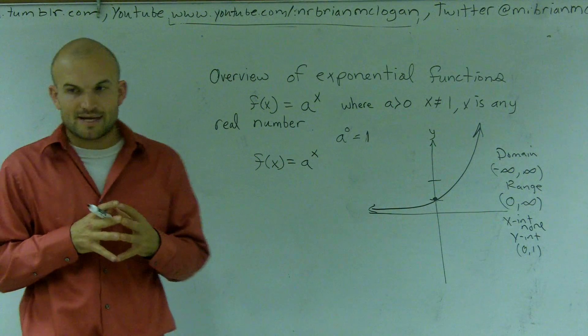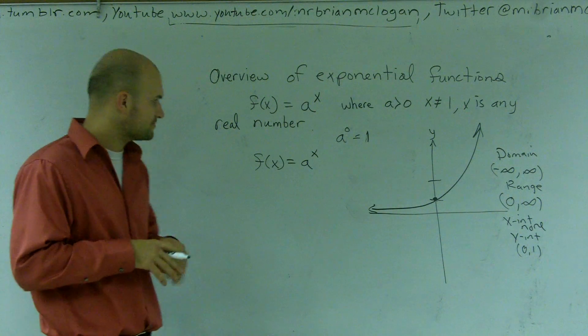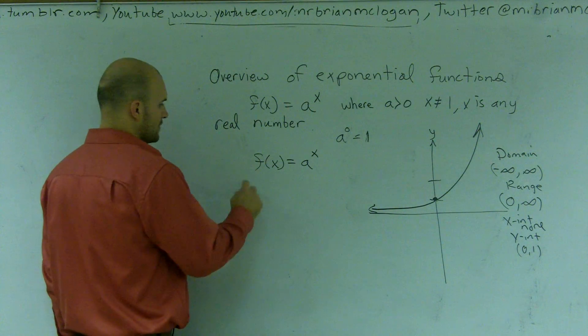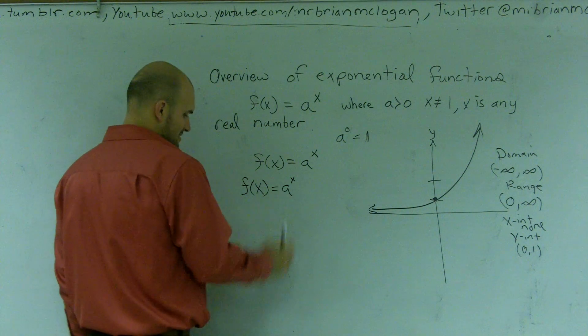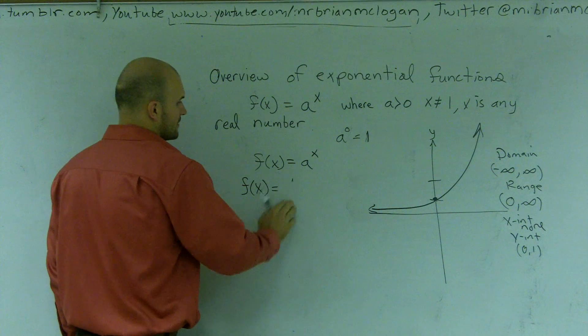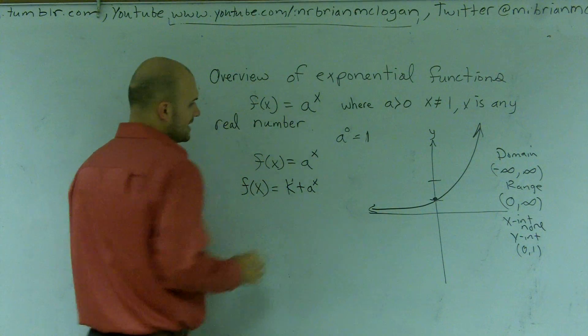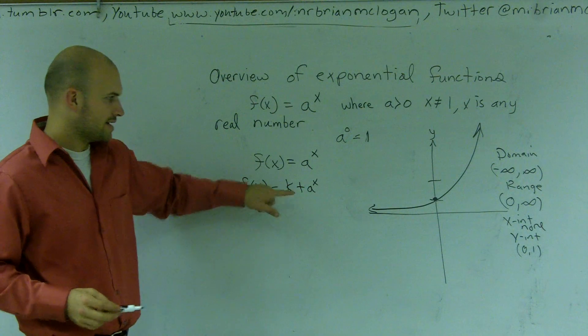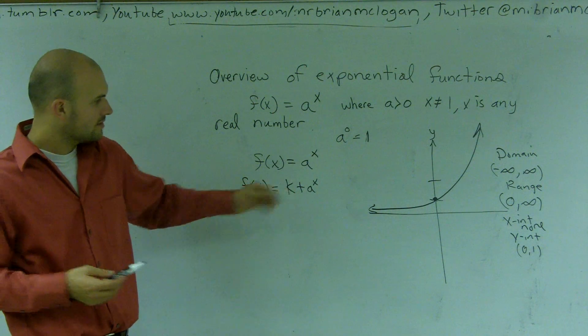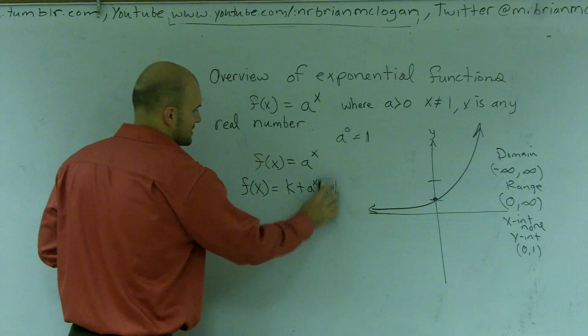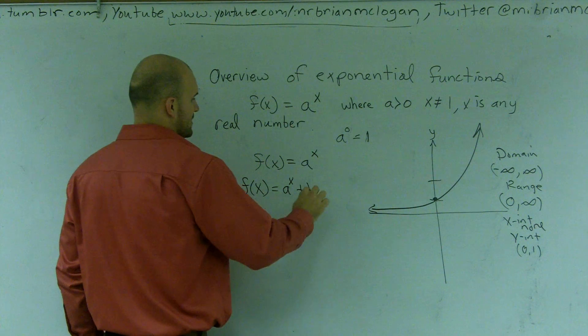And if I want to talk about transformations, what's going to happen when I have a transformation? Well, first of all, if we do f of x equals a to the x, and let's actually put the k in front. If I add a number to my function and it's outside of the function, right, what that's going to do is, I can do it on the outside. It doesn't really matter if you add the k in front or behind.